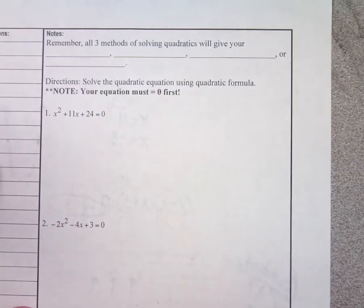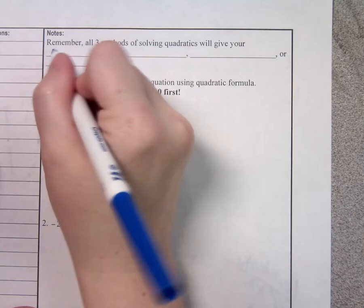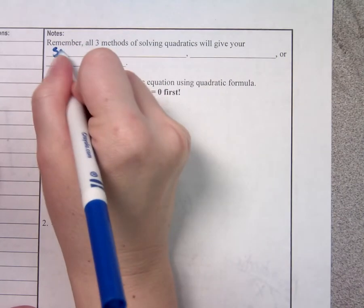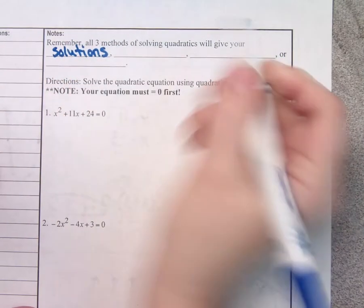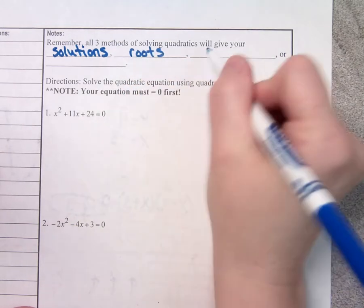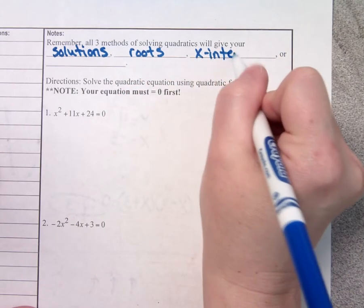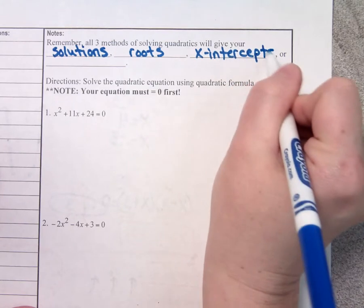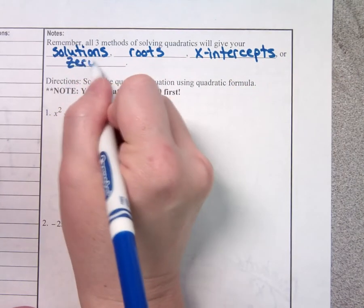Remember, all three methods of solving quadratics — factoring, quadratic formula, and graphing — give you your solutions. What else do we call those besides solutions? Roots. X-intercepts. Zeros.